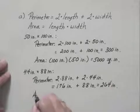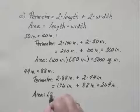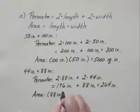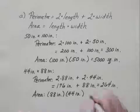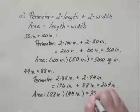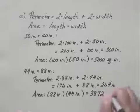The area is the length times the width, which would be 88 inches times 44 inches. And if we do that multiplication, we get 3,872 square inches.